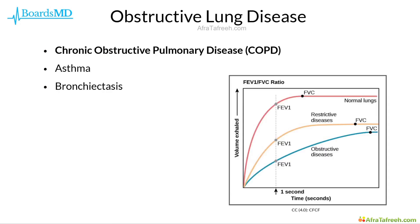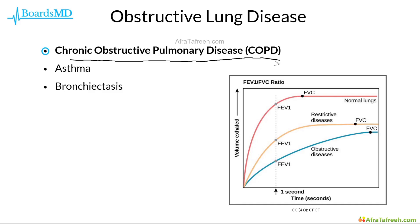That'll do it for our discussion of chronic obstructive pulmonary disease, or COPD. The highest yield points from this series are regarding COPD exacerbations and how to manage them, including indications for the use of antibiotics, the use of non-invasive ventilation prior to progressing to mechanical ventilation, as well as alpha-1 antitrypsin deficiency. In subsequent modules, we will cover both asthma and bronchiectasis in detail.